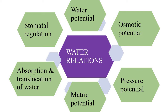Next is absorption and translocation of water. There are no specific organs for translocation. Plant roots absorb water from the soil, and with the help of xylem vessels, they transport water from roots to all parts of the plant. The last topic is stomata regulation — how stomata help in gas exchange and water regulation in plants. During transpiration, a lot of water is lost through stomata pores, which release water vapor into the environment. To control water loss, plants close their stomata during high rates of transpiration to prevent more water loss.